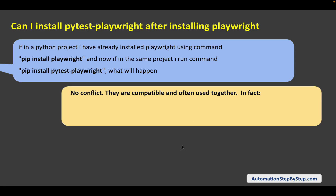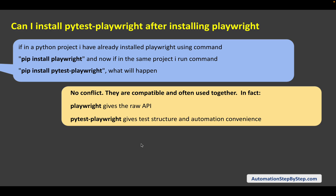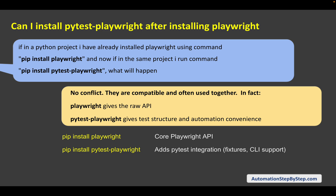The answer is there is no conflict — they are compatible and often used together. If you have a new project, you can directly run `pip install pytest-playwright` and skip the plain playwright install. If you're already using Playwright in an existing project, you can still run this command without any uninstallation. You'll simply gain all the pytest features and options on top of what you already have.